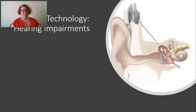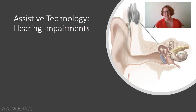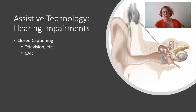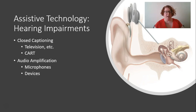For students with hearing impairments, we have closed captioning for videos and television. Closed captioning benefits not just hard-of-hearing students but also students with dyslexia, who can read the words and associate them. We also want to have CART or other transcription services available, where someone comes into class and does live typing of what you're saying. There are also audio amplification devices — typically a microphone worn around your neck that captures your voice and transmits it directly to the student through a listening aid.